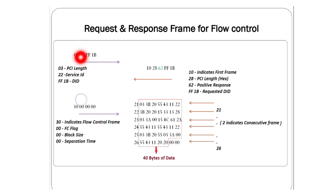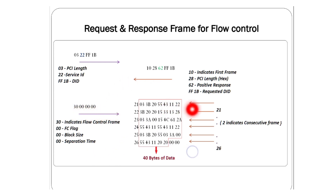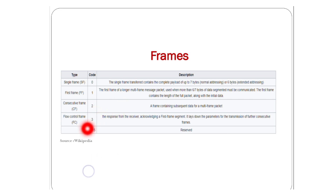To summarize the flow: first you are requesting, then you receive a response. The ECU sends the first frame with the PCI length more than 8 bytes, so you must send 30 00 00 — that is the flow control flag, block size, and separation time — back to the ECU. Once the ECU receives the flow control, it will then send consecutive frames starting with 21.